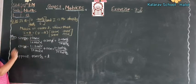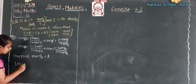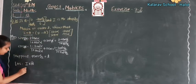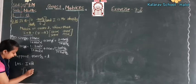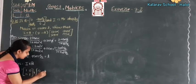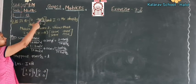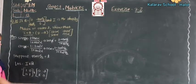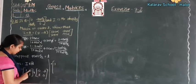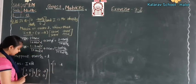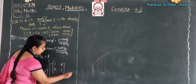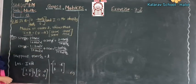We prove that LHS equals RHS. LHS is I plus A. I is the identity matrix of order 2, which is [1, 0; 0, 1]. Adding matrix A in t-format, which is [0, -t; t, 0], we get: [1+0, 0-t; t+0, 0+1] = [1, -t; t, 1]. This is equation number 1.